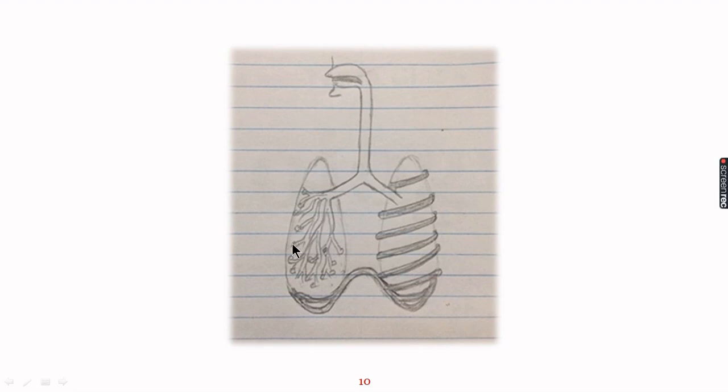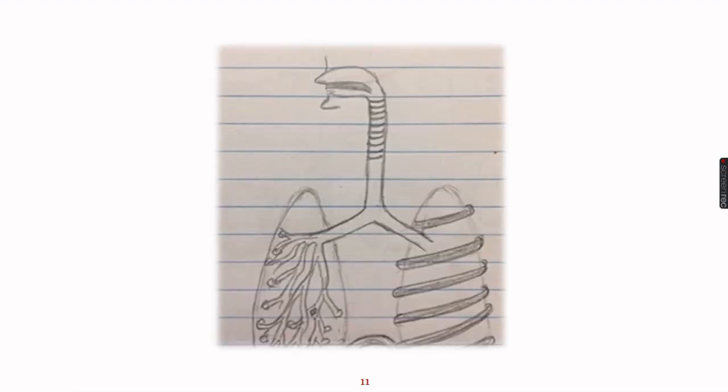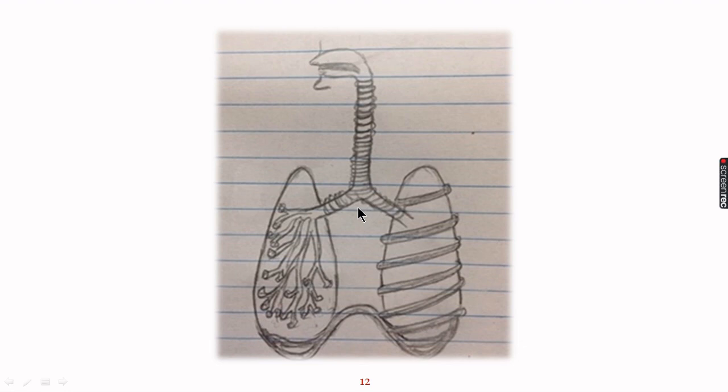These are the bronchioles and these are the alveoli. Now we will move to the windpipe and draw cartilaginous rings around it. We know that cartilaginous rings prevent the collapsing of trachea and we extend these cartilaginous rings up to bronchi also.